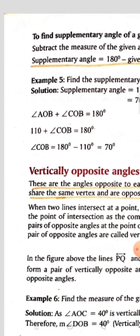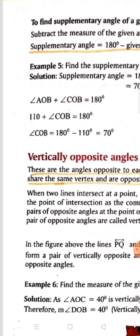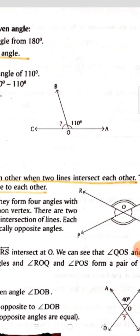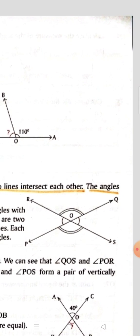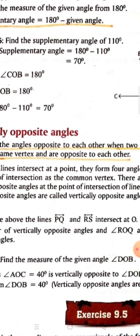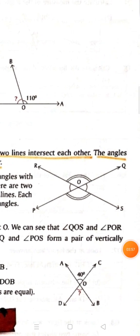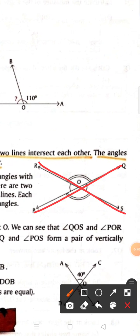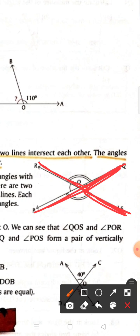Now, vertically opposite angles. These are the angles opposite to each other when two lines intersect. The angles share the same vertex and are opposite to each other. In the figure, two lines intersect at common point O. The angle and its opposite angle both have vertex O, so these are vertically opposite angles.